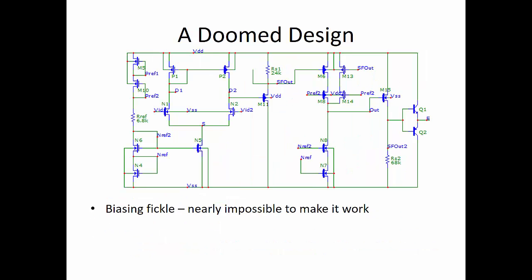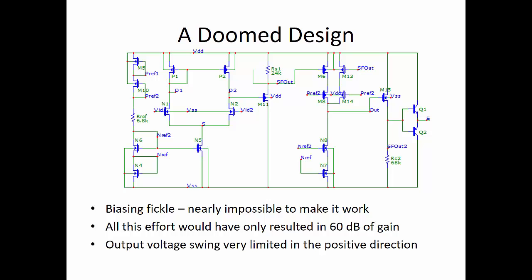Here's an example of a dual design of what not to do. The input is, again, the active load differential pair from Task 3. It drives a source follower, which then drives a Cascode amplifier. Unfortunately, the biasing of this circuit proved to be nearly impossible, and all of this effort resulted in only 60 decibels of gain, not very much. The output voltage swing is very limited in the positive direction for this device, mostly impacted by the body voltages of the transistors M15, N2, and N1.